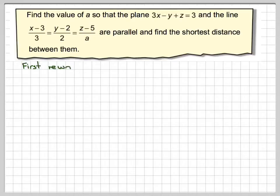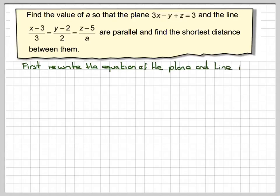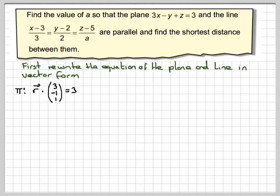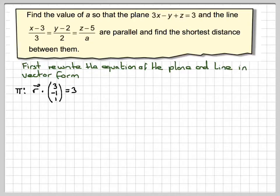First of all, what we need to do is rewrite both of these in their vector form. We're going to take the plane and write it as r dot (3, -1, 1) equals 3, where the normal vector (3, -1, 1) comes from the coefficients, and the 3 comes from the right-hand side.